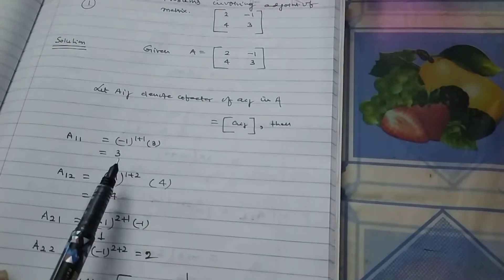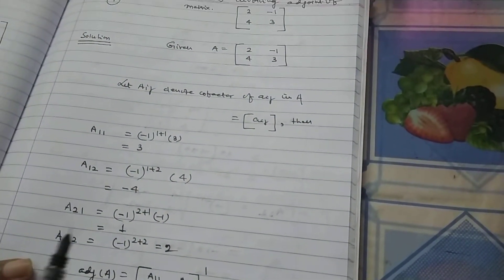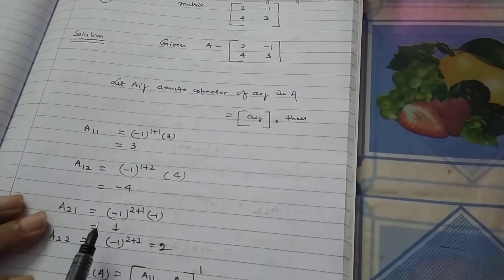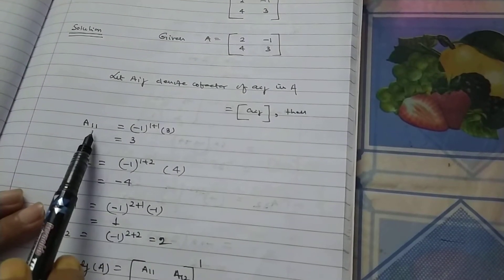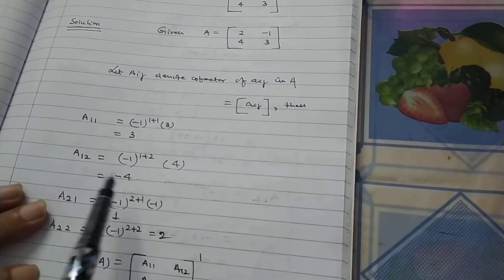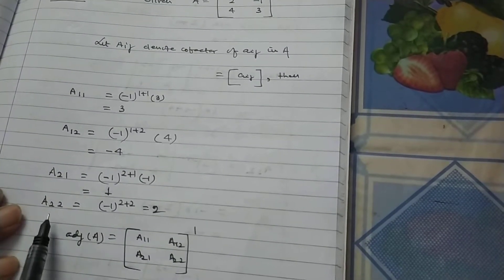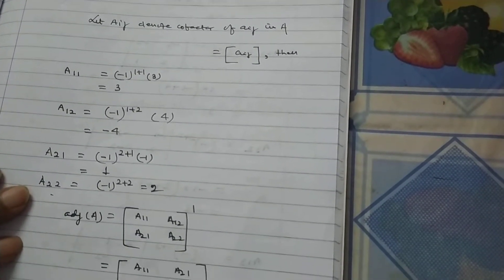In this way, we find the adjoint of any matrix. So, of course, adjoint of A11 is 3. Adjoint of minus 1 is minus 4. No, no, cofactor of A11 is 3. The cofactor of A12 is minus 4 and cofactor of A21 is 1 and cofactor of A22 is 2.